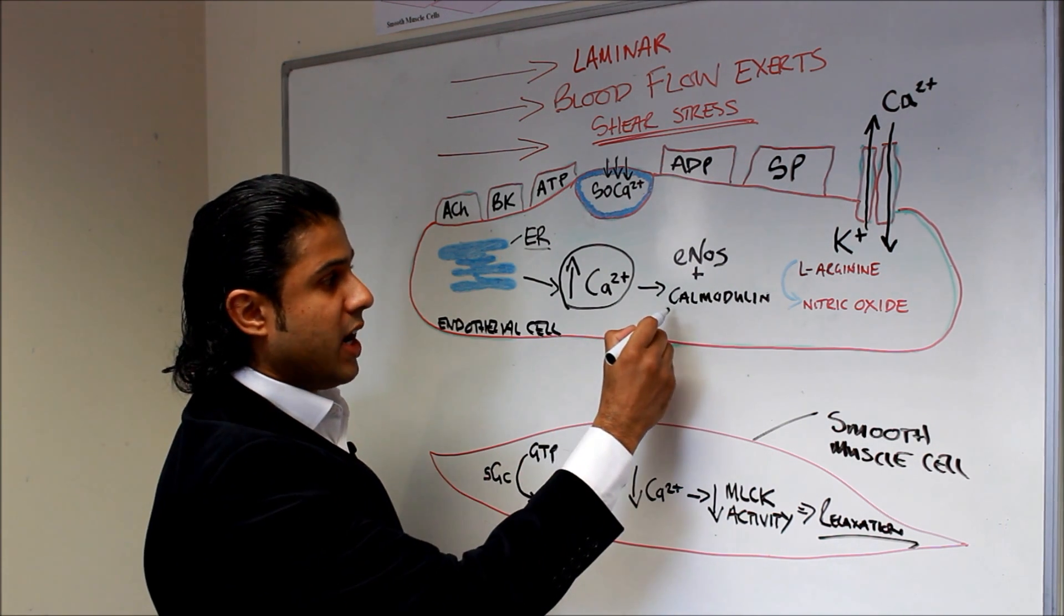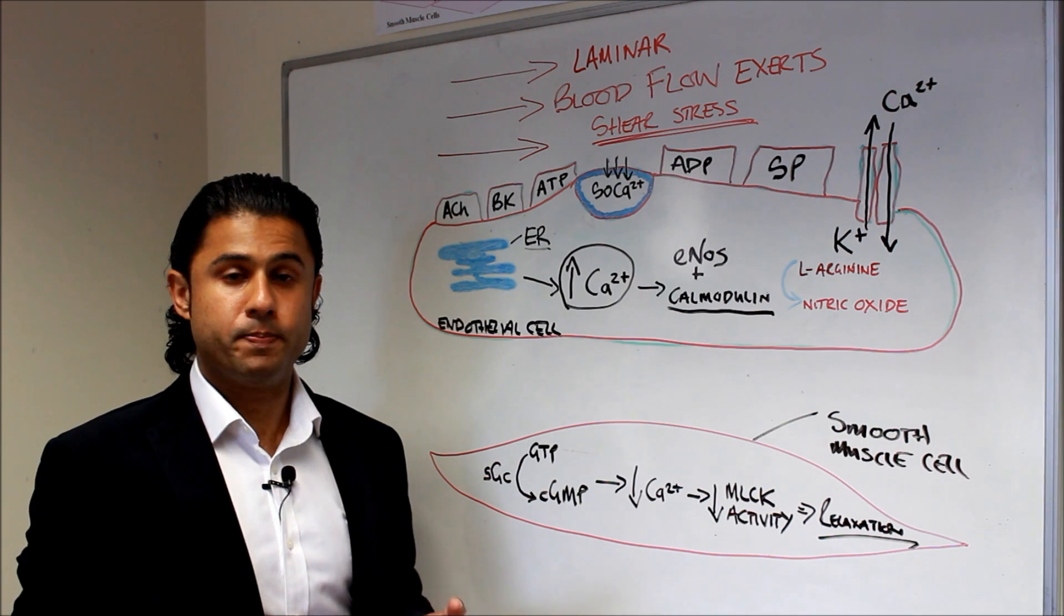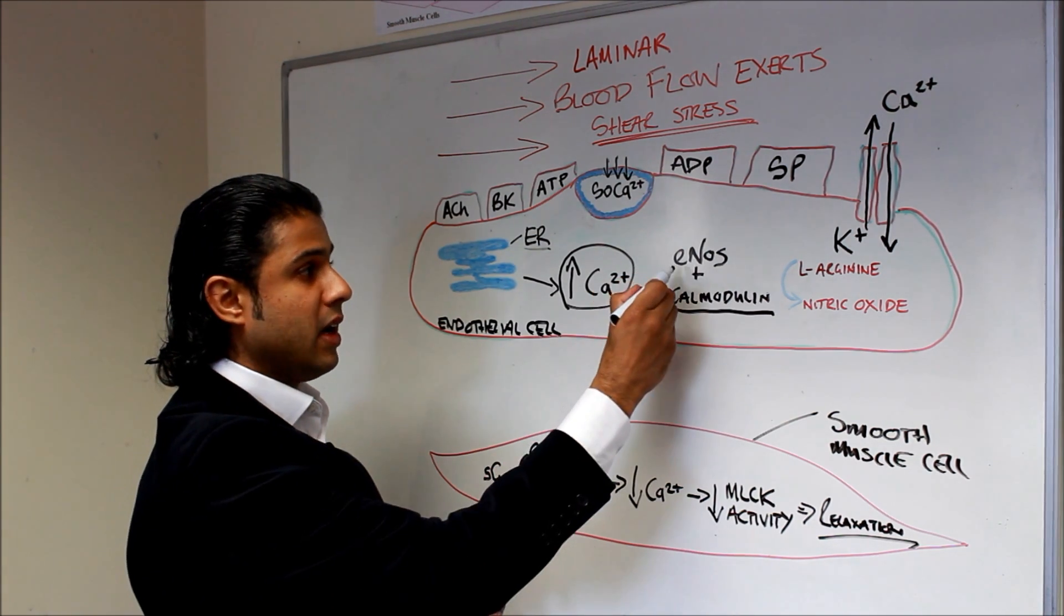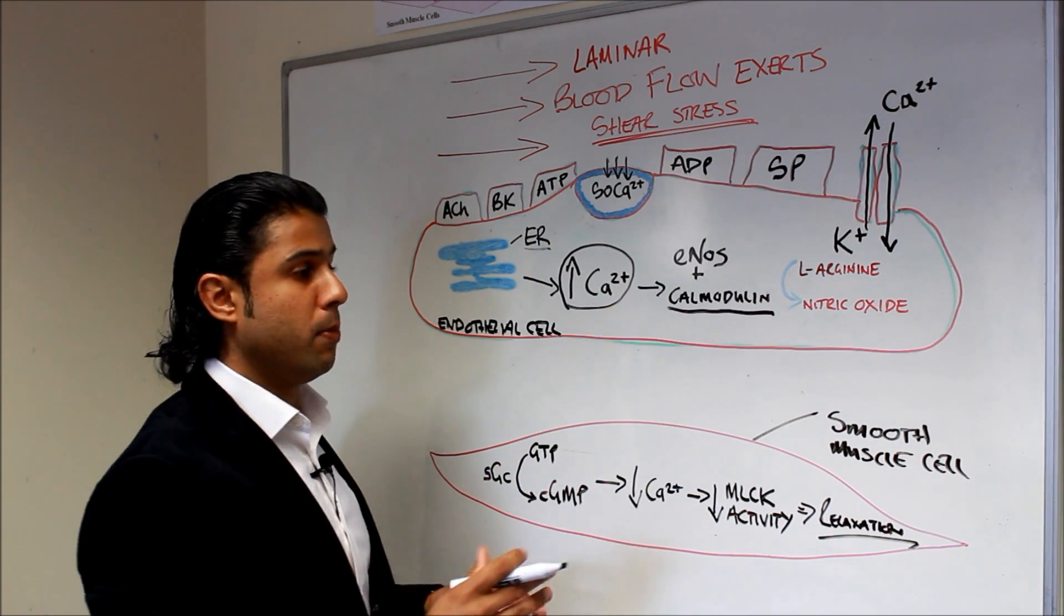The calcium will then change the conformation of this protein here called calmodulin. Now the conformation of that protein will change allowing ENOS, endothelial nitric oxide synthase, to bind to the calmodulin.